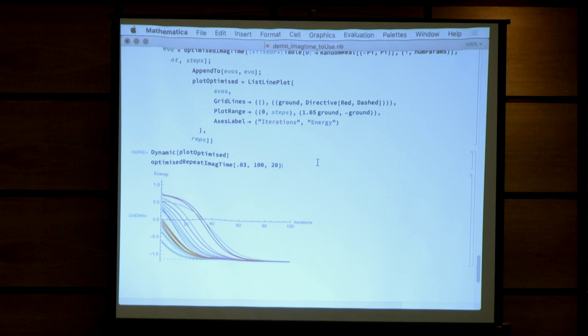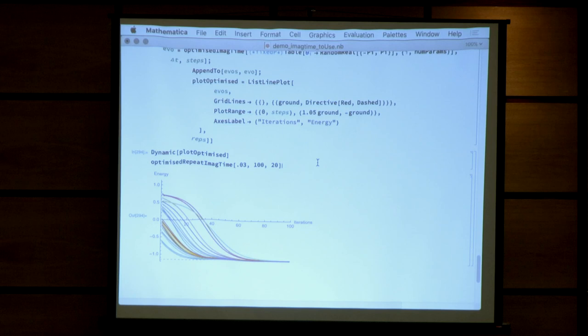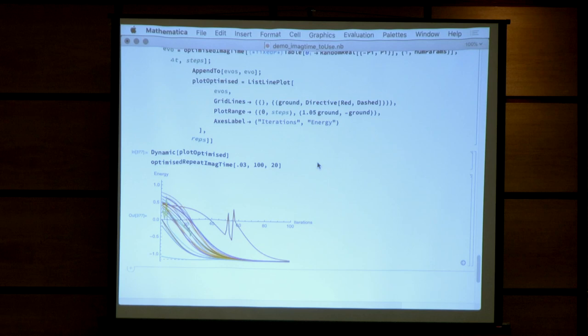We can also just cut the experimentalist out of the story and access the state more directly, which will simply give us a more rapid calculation. So here we're doing 20 or so different cases very, very quickly by accessing the state in a more direct way.